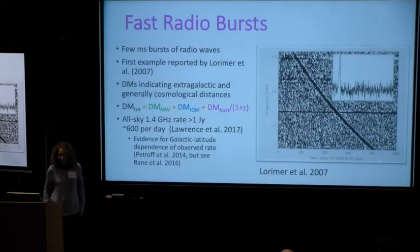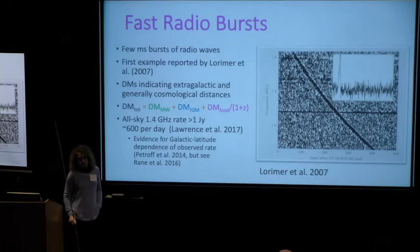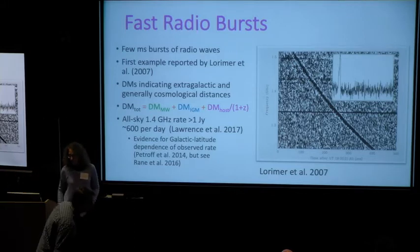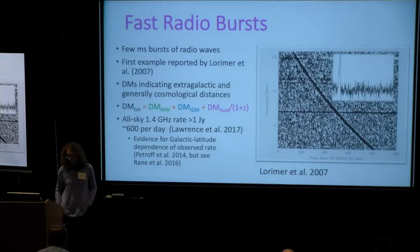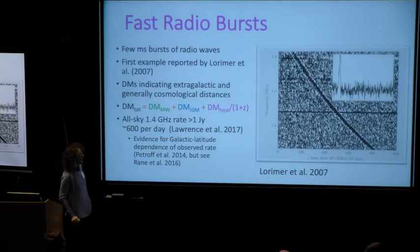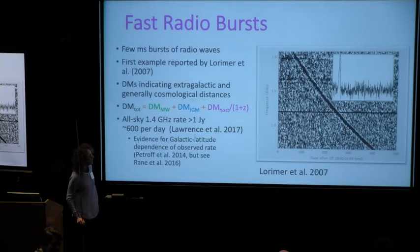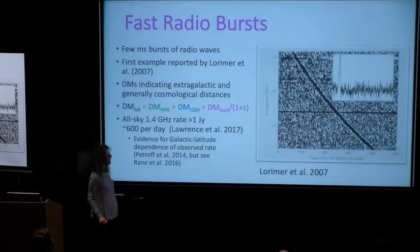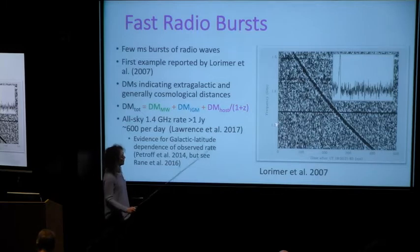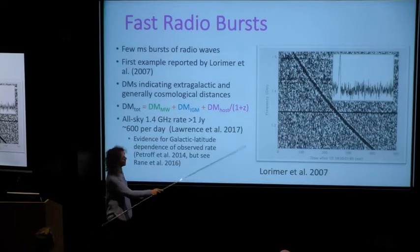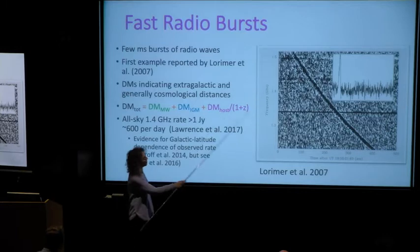Fast radio bursts are few millisecond-long bursts of radio waves. The first example is the now iconic Lorimer burst from 2007, where you can see time on the x-axis and frequency on the y-axis. You see the burst sweep through the band.